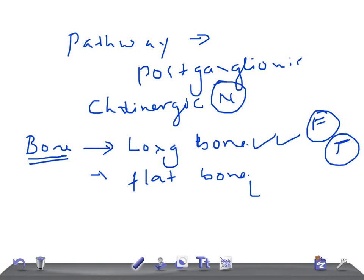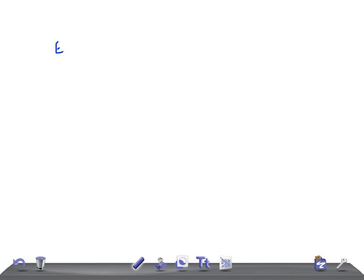Ewing's sarcoma is known to have multi-centric origin. It most commonly affects the long bones. In long bones, the site where it arises from is the diaphysis. Remember, it's the diaphysis—very important. You should never forget that Ewing's sarcoma arises from the diaphysis.